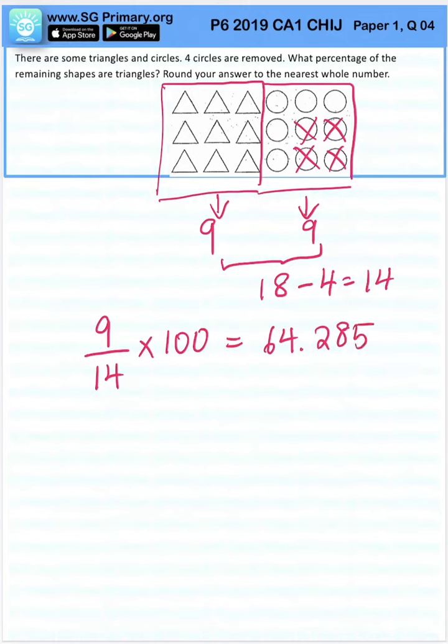They want us to round it to the nearest whole number, which means we don't want any decimal. So this position in tens will affect the ones. Remember from 1 to 4, we round down. 5 to 9, we round up. 2 is in the first category, so the answer will be 64.